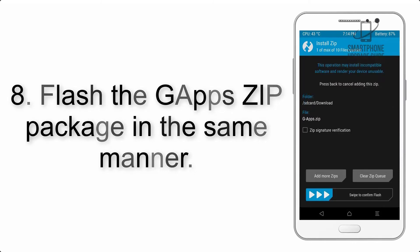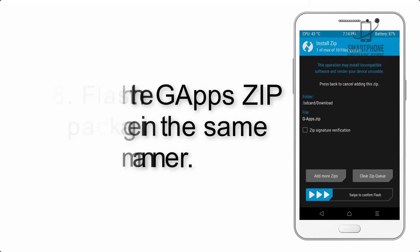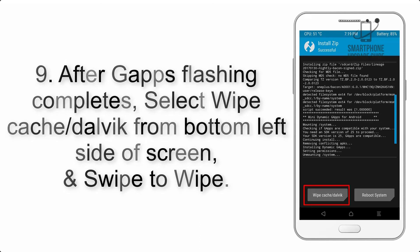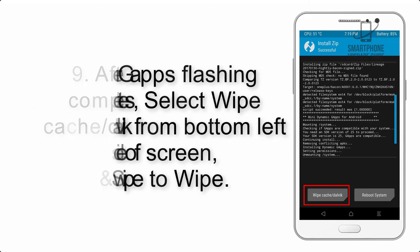Step 8: Flash the GApps zip package in the same manner. Step 9: After GApps flashing completes, select Wipe Cache and Dalvik from the bottom left side of the screen, and swipe to wipe.